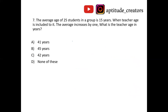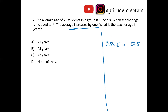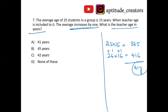The average age of 25 students in a group is 15 years. When a teacher is included, the average increases by 1. Find the teacher's age. Traditional method: sum of 25 students is 15 × 25 equals 375. After teacher is included, 26 persons with average 16: 26 × 16 equals 416. Teacher's age is 416 minus 375 equals 41 years. Answer is option B, 41.